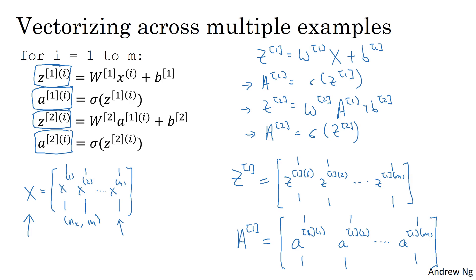One other property of this notation that might help you to think about it is that these matrices, say Z and A, horizontally we're going to index across training examples. So that's why the horizontal index corresponds to different training examples. And you sweep from left to right, you're scanning through the training set. And vertically, this vertical index corresponds to different nodes in the neural network. So, for example, this node, this value at the top leftmost corner of the matrix corresponds to the activation of the first hidden unit on the first training example.